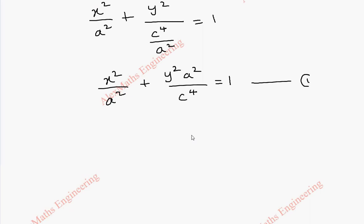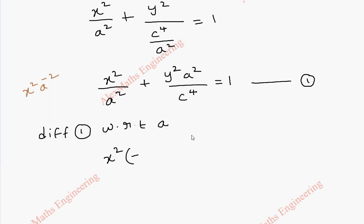Let's keep this as our first equation. Now we are going to differentiate this first equation with respect to the constant a. Since x square is treated as a constant, the first term is x square times a power minus 2. When we differentiate a power minus 2, we get minus 2 times a power minus 3. Similarly, y square by c power 4 is kept as constant and a square differentiates to 2a, all equal to 0.